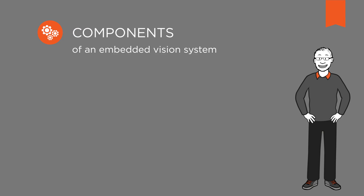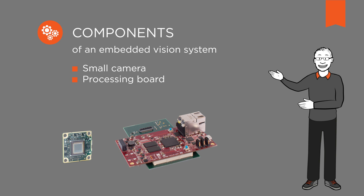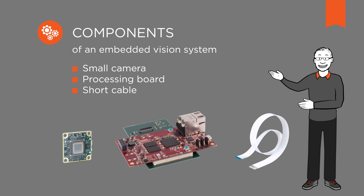How is an embedded vision system structured? An embedded vision system consists of a small camera directly connected to the processing board, usually via a short cable. These components will then be integrated into a larger system. A PC in machine vision is appropriate for general purpose computing, whereas processing boards in an embedded vision system are developed to perform application-specific tasks.